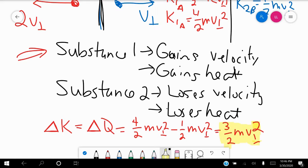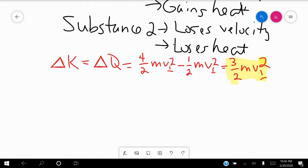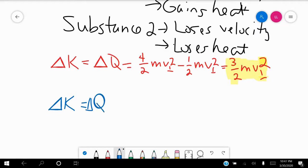So you can do the same thing by looking at substance two and note that it will lose heat, because when we do that subtraction, we're going to have 1 half mV squared minus 4 halves mV perpendicular squared, which ends up being negative 3 halves mV perpendicular squared.